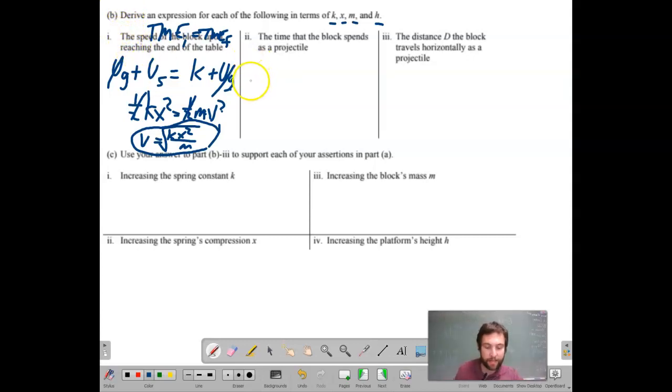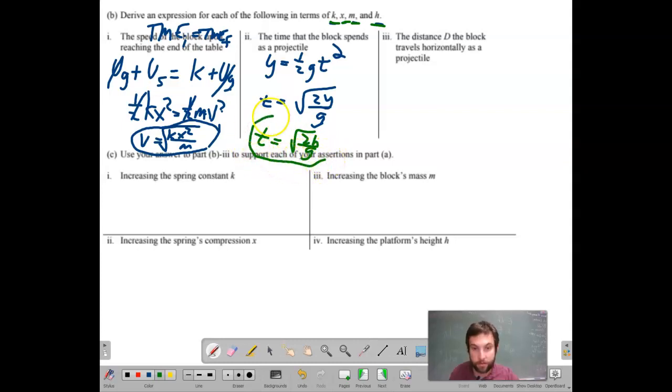So the time that the block spends as a projectile, we did this already, too. We already know. So time, projectile. If we need time and we're using projectile motion, then we go to the y equations. Let's say the displacement equals 1 half gt squared. Solve for t. t equals square root of 2y over g. That's it, right? No. Because what did I say? It's got to be in these terms. So that means t equals square root of 2h over g.